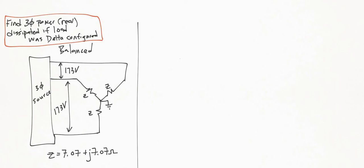On the right we have a balanced three-phase load. All we're given here is the line-to-line voltage, which is 173 volts—that's 173 volts from phases A to B, B to C, and A to C. We're also given the impedance of one leg, which is 7.07 + j7.07 ohms.